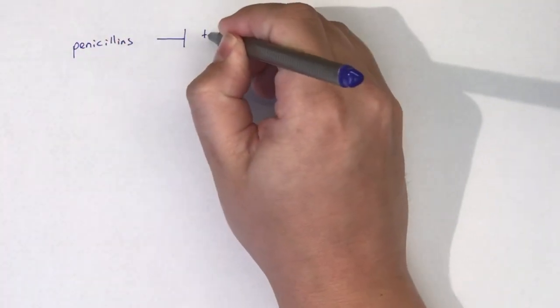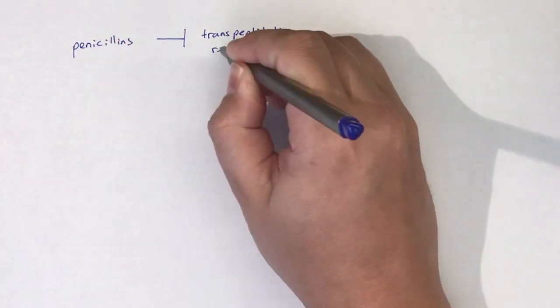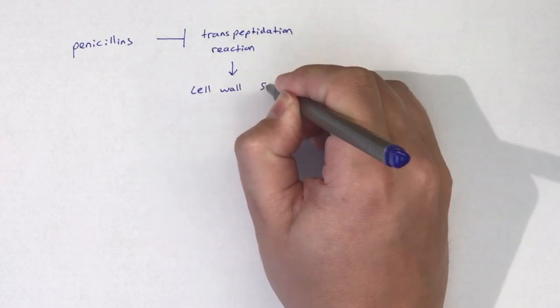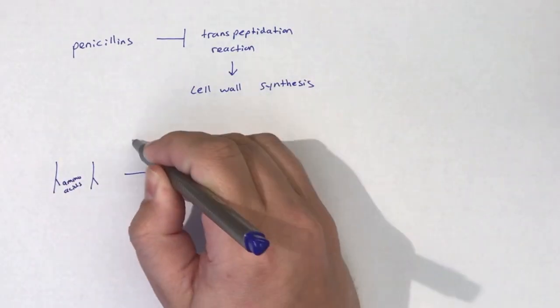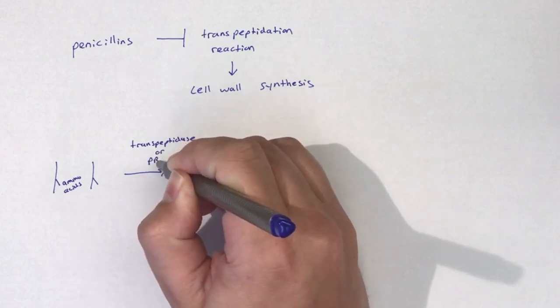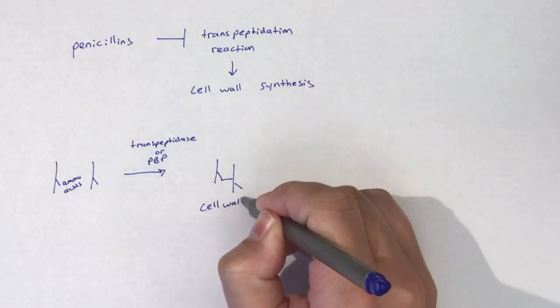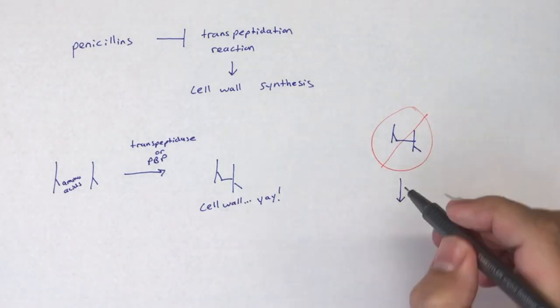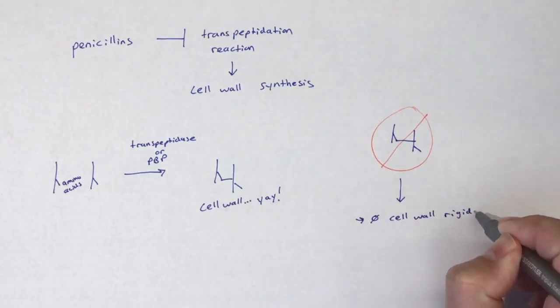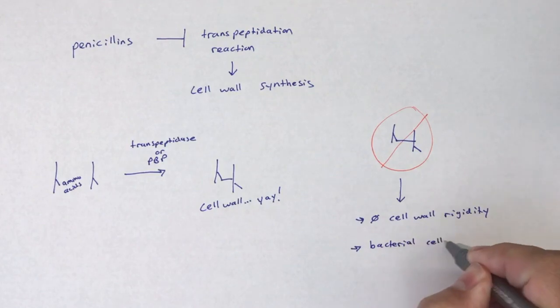Penicillinase-resistant penicillins have the same antibacterial action as other penicillins. These drugs act as cell wall synthesis inhibitors due to their competitive inhibition of transpeptidase. Furthermore, penicillinase-resistant penicillins are bactericidal to proliferating bacteria. For more review on this mechanism of action, please review the video on penicillins.